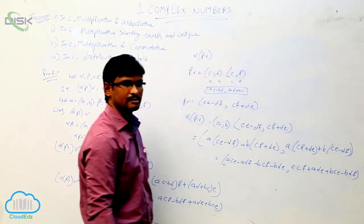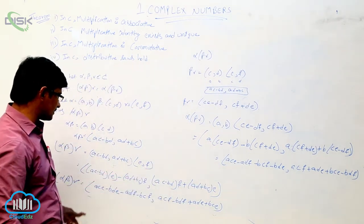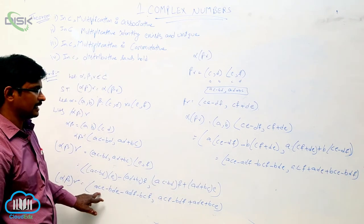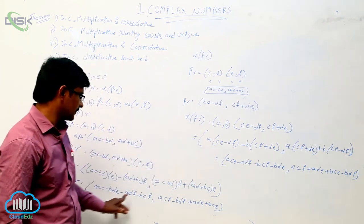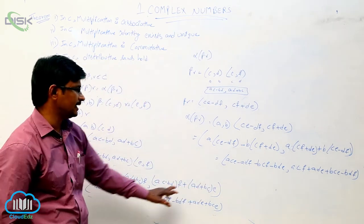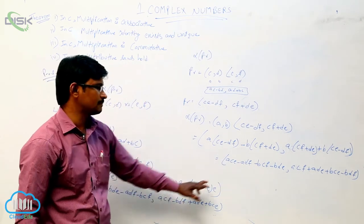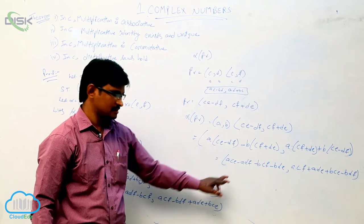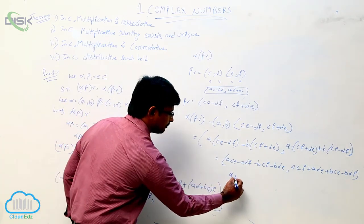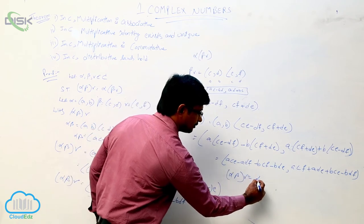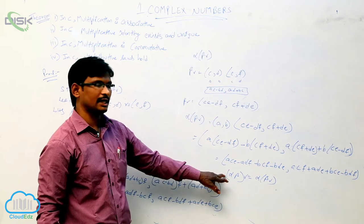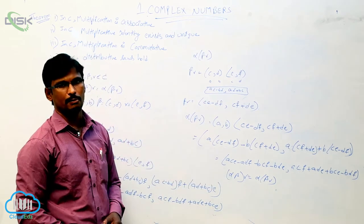This is the RHS answer. Now observe the LHS and RHS answers — both are the same. ace minus bde minus adf minus bcf, and similarly the second components are also the same. So we can say that alpha beta into gamma equals alpha into beta gamma. It shows that multiplication satisfies the associative property.